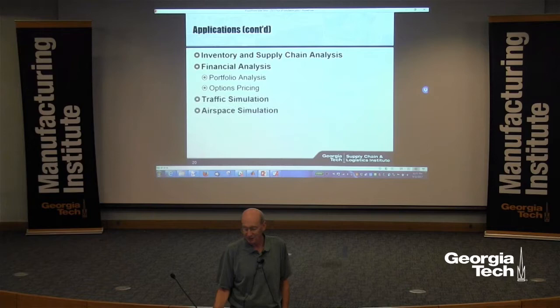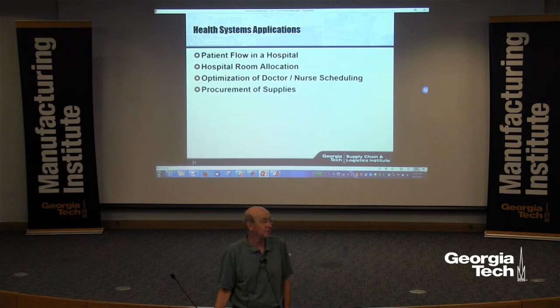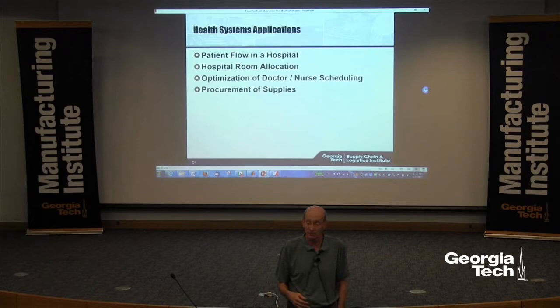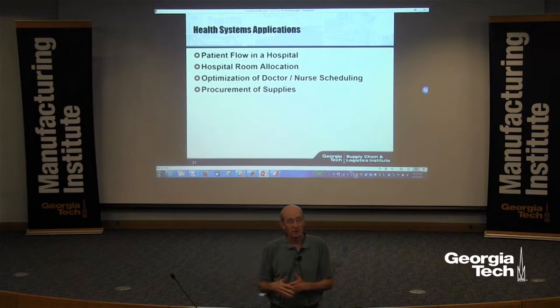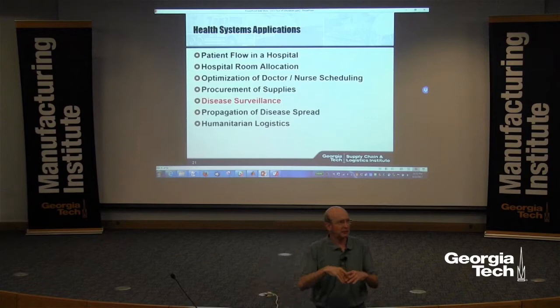At Georgia Tech we do a lot of health systems simulations, some of which involve supply chain: patient flow, hospital room allocation, procurement of supplies. There was a major supply chain problem involving procurement of vaccination for swine flu — the supply chain broke down and half the vaccination was no good. Luckily, swine flu wasn't a particularly bad outbreak — it was actually less harmful than seasonal influenza. We also use simulation for disease surveillance and propagation of disease modeling.